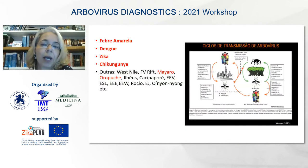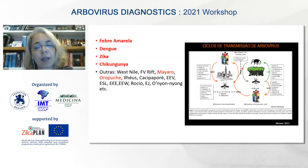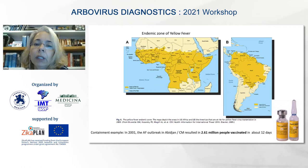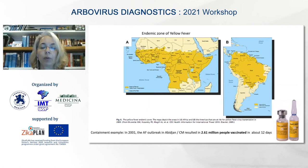For us in Brazil, we have some arboviruses that are more important and more prevalent. Yellow fever, for example, is an old and historical disease for us, and recently there was a huge outbreak. Dengue has been a problem for the last 40 years. Recently also Zika and chikungunya. Yellow fever transmission occurs in regions shown in yellow — in Africa in both sylvatic and urban cycles, and in South America only in the sylvatic cycle. A recent outbreak in Africa in 2001 required vaccination of millions of people to stop it.